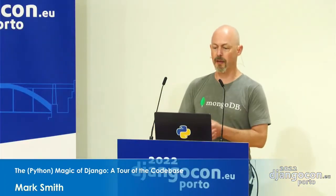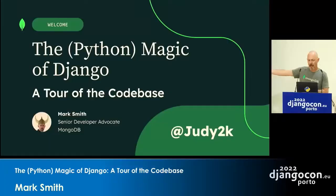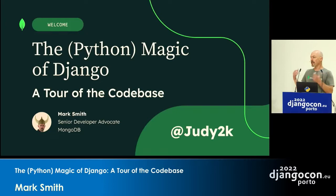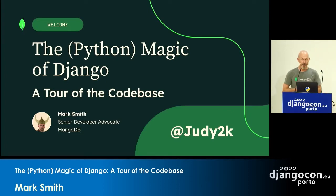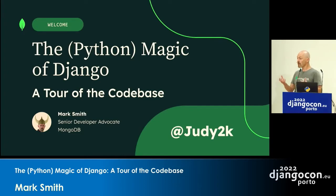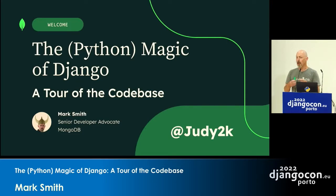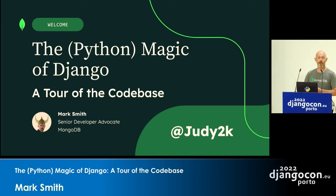As it says on the slide, my name is Mark Smith, although I'm known as GD2K online generally for reasons that aren't as interesting as you might imagine. I'm a senior developer advocate at MongoDB. It may be a bit of a surprise that I'm here, given that Django and MongoDB aren't exactly designed to work together. But as a big fan of both, if anybody is using the two things together and has suggestions, I'd love to have a chat around the conference.